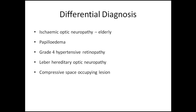Differential diagnosis includes ischemic optic neuropathy, which occurs in an elderly population above 50 years of age. Papilledema is associated with disc edema, but loss of central vision is late in cases of papilledema, which is a differentiating sign. Grade four hypertensive retinopathy also shows decreased vision and color vision but less so. Leber's hereditary optic neuropathy comes in the differential. Any compressive space-occupying lesion in the orbit or brain may also cause disc edema.